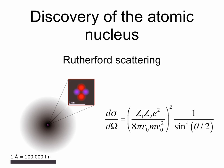Another example is the discovery of the atomic nucleus. About 100 years ago, Ernest Rutherford bombarded gold foil with alpha particles to discover that protons were bunched together in atomic nuclei. Here's the cross-section for the nucleus that he discovered, and sure enough, there's a sine to the fourth term in the denominator.